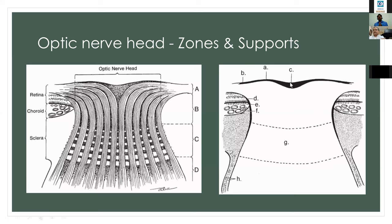These astroglial cells and astrocytes are present not only on the surface but also among the bundles of axons, separating them from the anatomical layers — the choroid as well as the sclera. The internal limiting membrane, continuous with the retinal ILM, forms a central meniscus of Kuhnt. The supporting tissue next to the retina is called the intermediary tissue of Kuhnt; next to the choroid is the border tissue of Jacobi; and next to the sclera is the border tissue of Elschnig.